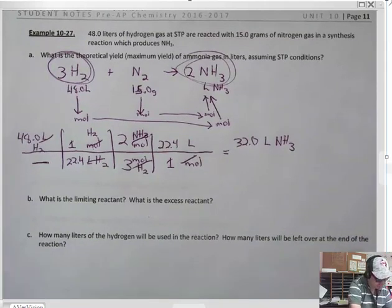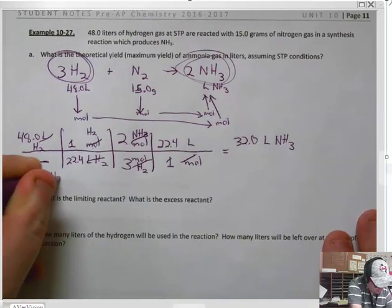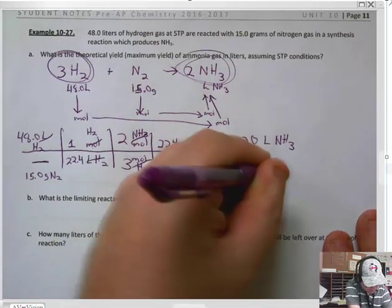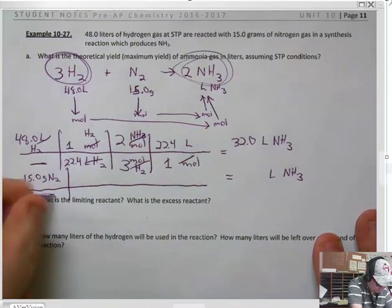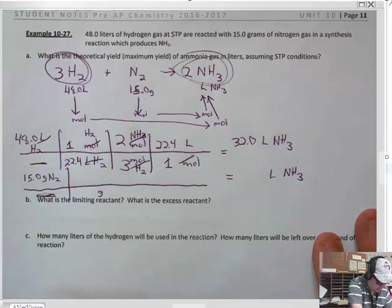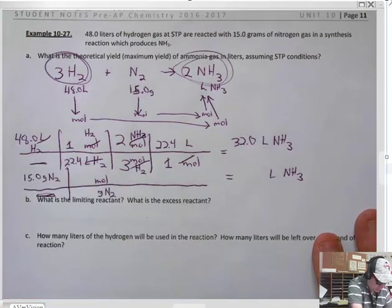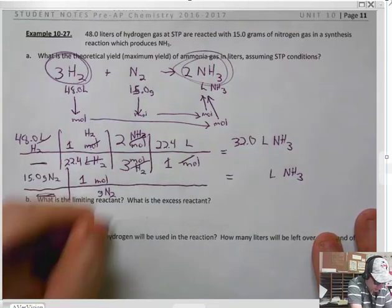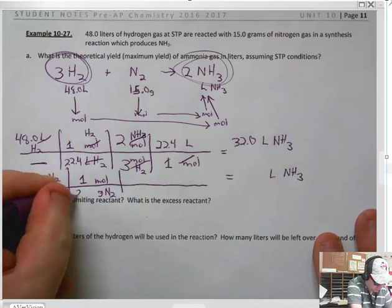Unfortunately, we're not done there. You also have to take 15 grams of nitrogen gas and convert it over to liters of NH3. Grams on the top, grams on the bottom. What are you going to convert to? Moles. What does the tape say? One mole. Molar mass of nitrogen, 28.02.